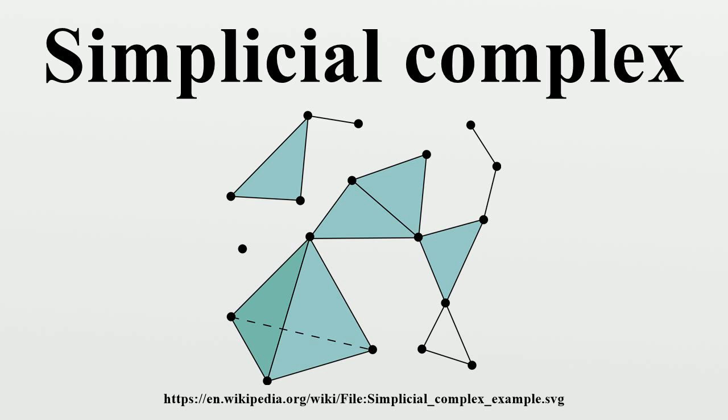Informally, a pure one-complex looks like it's made of a bunch of lines, a two-complex looks like it's made of a bunch of triangles, etc. An example of a non-homogeneous complex is a triangle with a line segment attached to one of its vertices.